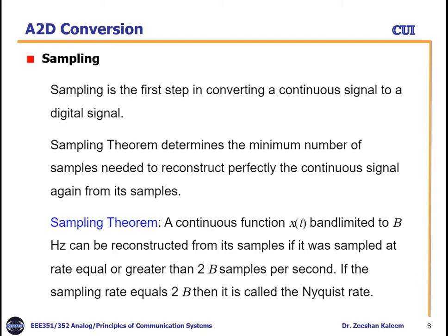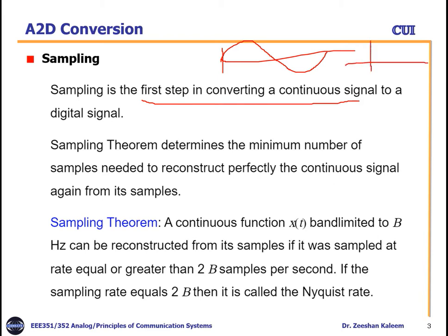Sampling is the first step in converting a continuous signal to a digital signal. For example, if we have a continuous signal like a sine wave and we would like to convert it into a digital signal, we first need to take samples. The important point here is what should be the exact sampling frequency, so that after sampling and converting to digital, when we need to convert back into analog, it should be fully recovered.